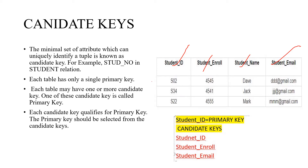There are 3 records — ID number S02, ID number S34, and ID number S22. These 3 students' information are stored in 3 records.